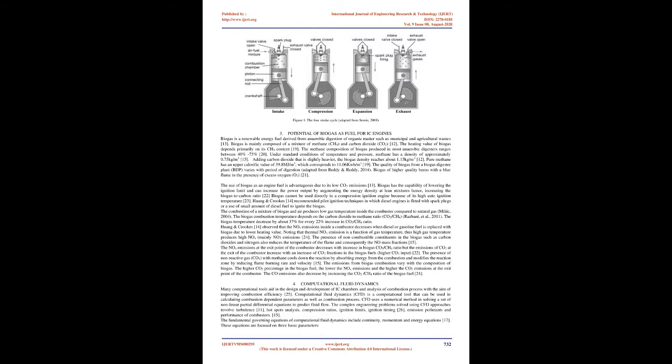For auto IC engines, a spark from a spark plug ignites the premixed air-fuel mixture. For the diesel principle, the air is compressed beforehand in the cylinder and the incoming fuel spray is ignited by the high pressure and temperature. In a spark-ignited (SI) engine, the four-stroke cycle starts with the piston positioned at top dead center (TDC), and as the piston travels down towards bottom dead center (BDC), the intake valve opens, letting the fresh charge of air-fuel mixture enter the cylinder during the intake stroke.